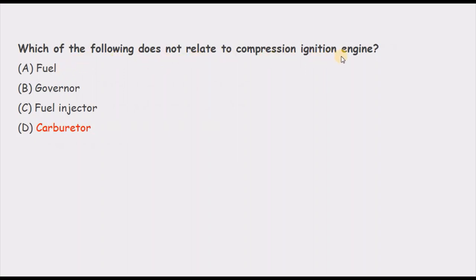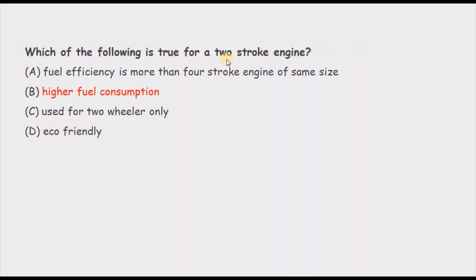Which of the following does not relate to a compression ignition engine? Fuel injection is related — in a CI engine, air is compressed then fuel is injected. A governor is required to respond to load changes. A fuel injector is required for fuel injection. However, the carburetor — a device that prepares the air-fuel mixture outside the engine — is used in SI engines, not CI engines. So carburetor is the correct answer — it does not relate to a compression ignition engine.